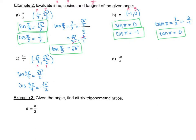Now for tangent of 3 pi over 4, that's y over x: positive square root of 2 over 2 divided by negative square root of 2 over 2. Since the numbers are the same, dividing them gives 1, but there is a negative for one of them, so the result is negative 1. So tangent of 3 pi over 4 equals negative 1.